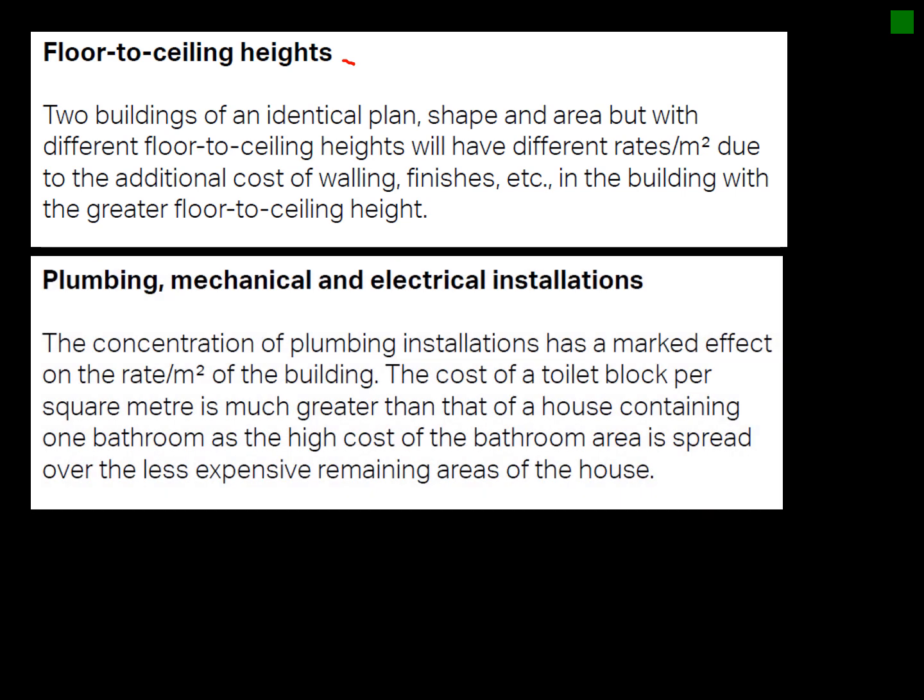Your plumbing and mechanical and electrical installations will have a big influence on your rate per square meter. A toilet block installation will have a lot more technical plumbing, which takes the rate per square meter up. When doing your task, consider the historical building you're basing your rate on — how many bathrooms did it have versus your new one? For example, two three-bedroom houses where one has en-suites will obviously have a higher cost.